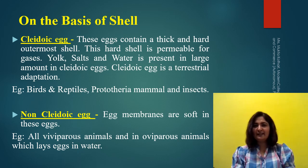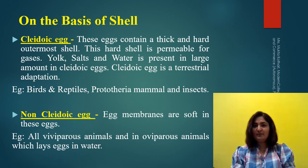The third type of classification of egg depends on the presence or absence of shell. There are basically two types: cleidoic egg and non-cleidoic. Cleidoic eggs show the presence of a thick and hard shell as the outermost membrane, which provides protection to the egg cell. This shell is permeable to gases. Examples are birds, reptiles, prototherian mammals, and insects.